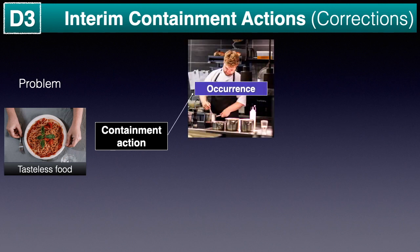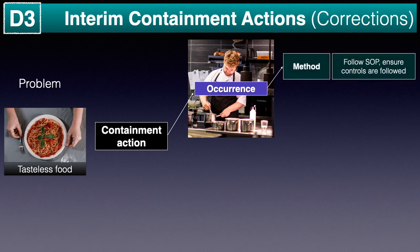The first one is occurrence control. The problem of tasteless food has to be stopped from occurring. Hence the first focus should be on controlling the method — that is, the cooking process here. This can be done by following the process or recipe as defined earlier and controlling the process of cooking.